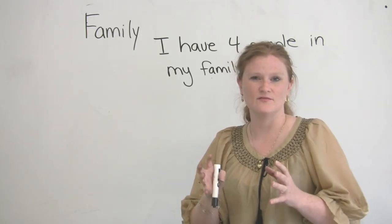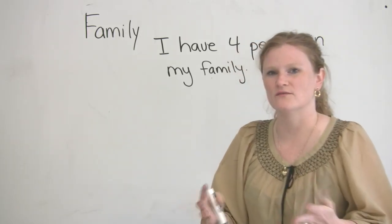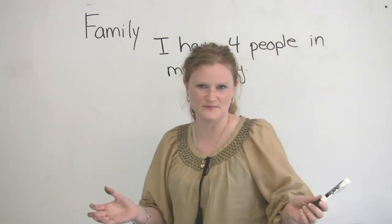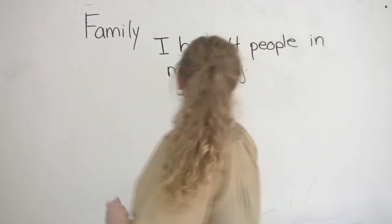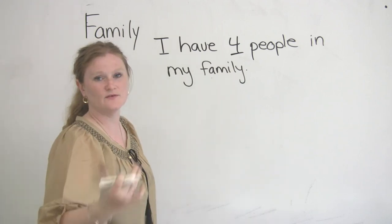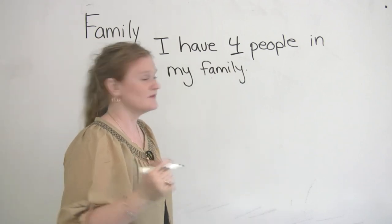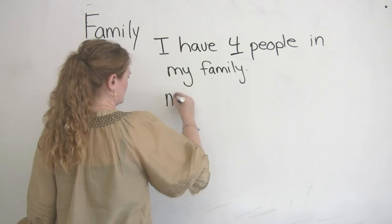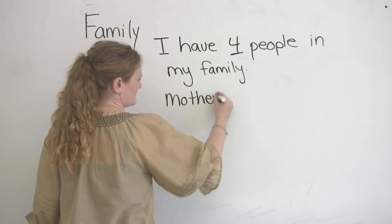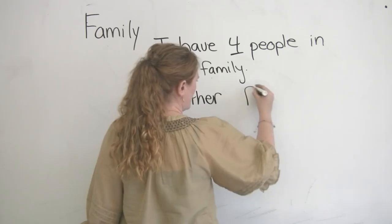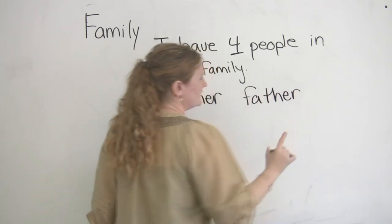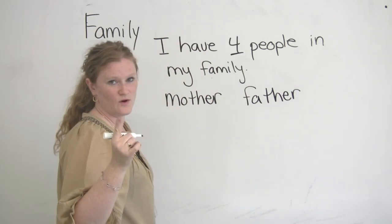Most families have four, five, six, seven — there's no regular number of people that a family has. It depends on you. I have four people in my family. You always include yourself. So, I have a mother, I have a father, and I also have one brother.